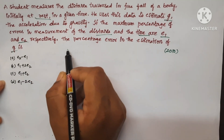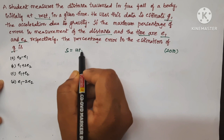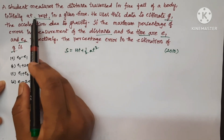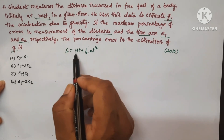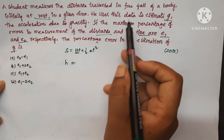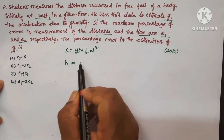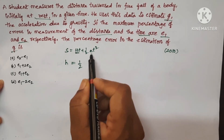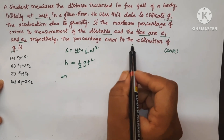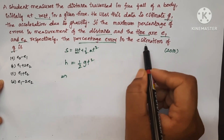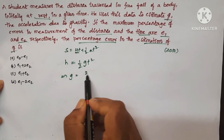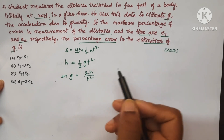Consider the equation S = ut + ½at². Here the body is initially at rest, so the 'ut' term becomes zero. Writing S as H for the height of a freely falling body, we get H = ½gt². From this, we have to find the percentage error in the estimation of G, so rearranging: G = 2H / T².